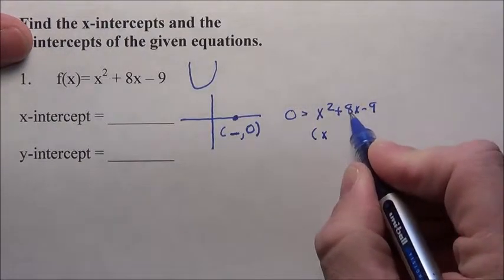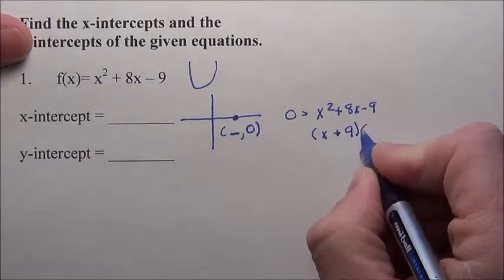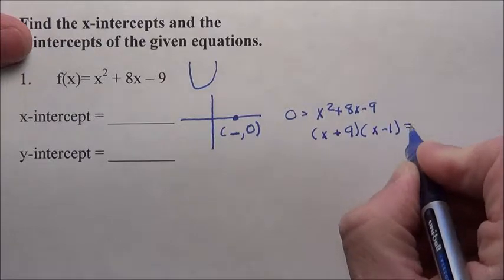Well, 3 and 3 gives me 9, there's no way that's going to give me 8. But what about a 9 and 1? Yes, this is going to factor down to a positive 9, x minus 1, equaling zero.